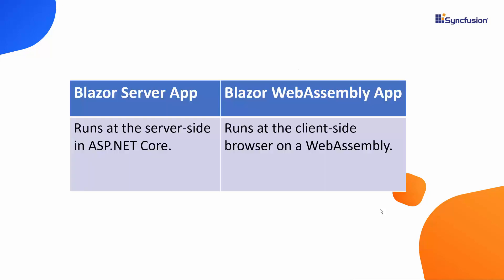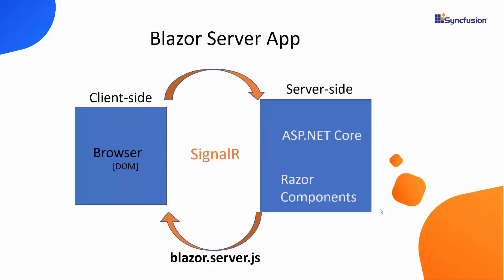We saw that the Blazor server app runs at the server side in ASP.NET Core. In contrast to that, the Blazor WebAssembly app is completely designed to run at the client side browser on a WebAssembly-based .NET runtime. In this video, let's see how the Blazor WebAssembly app works and also how to add Syncfusion components to it.